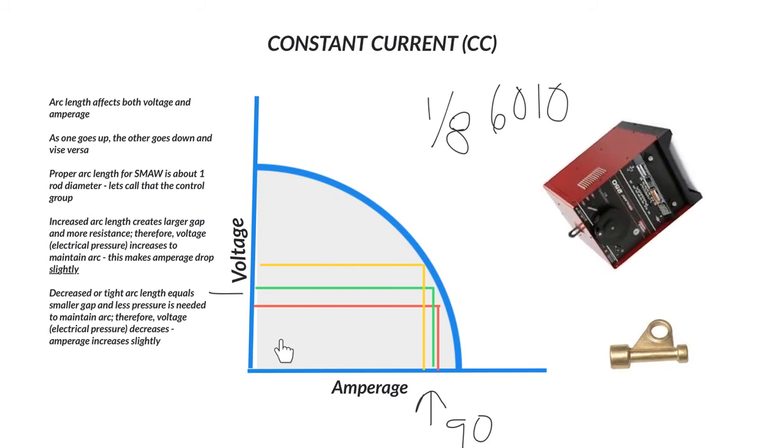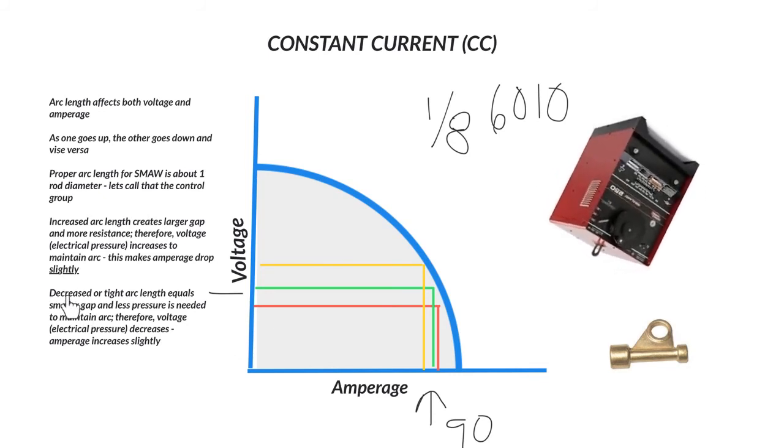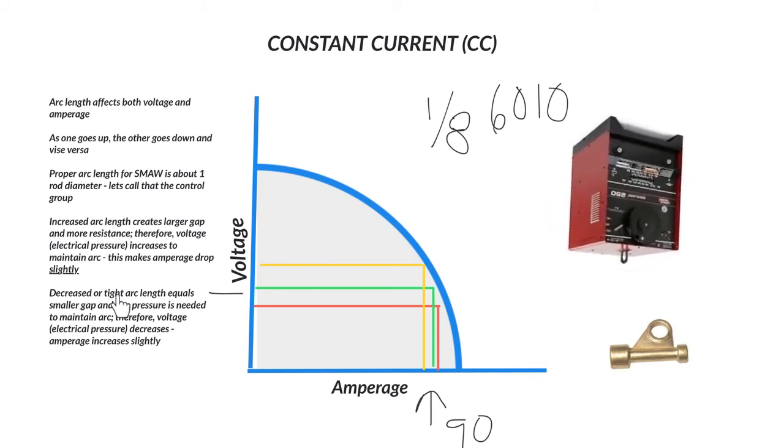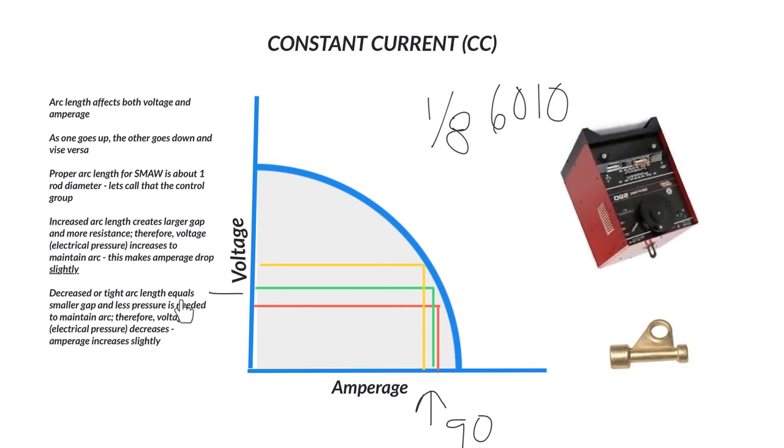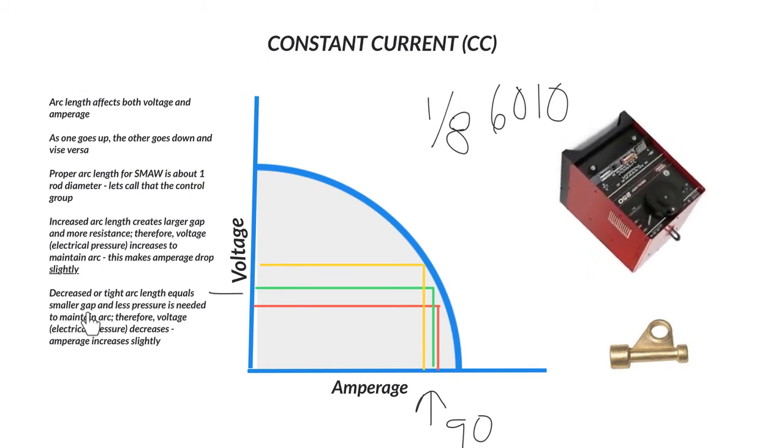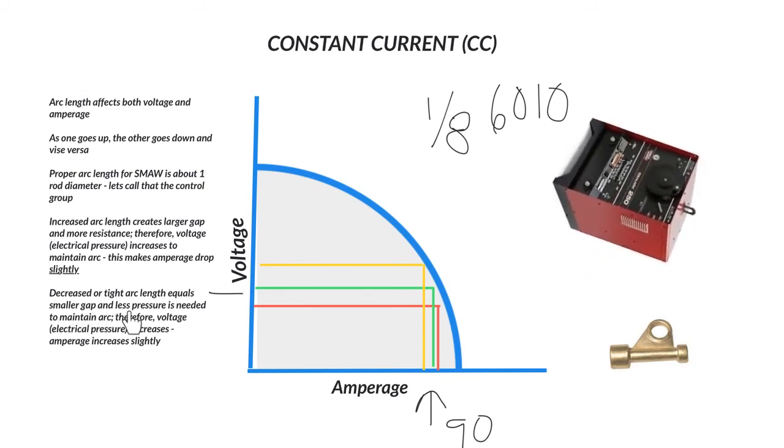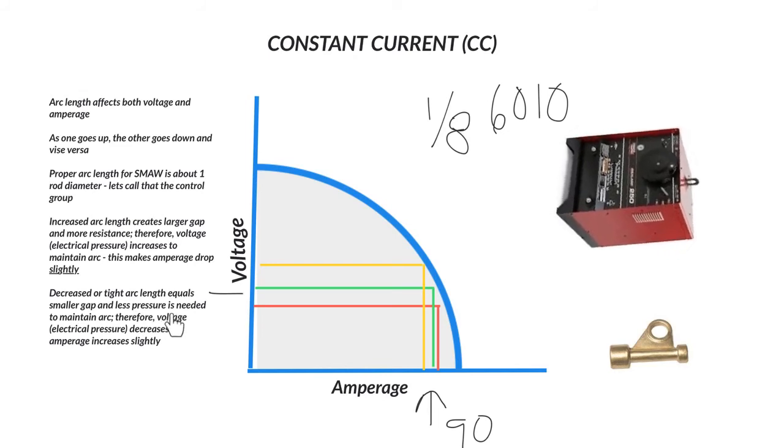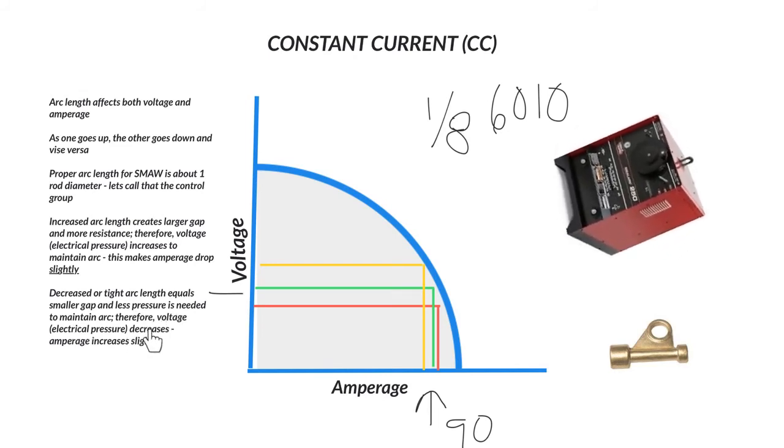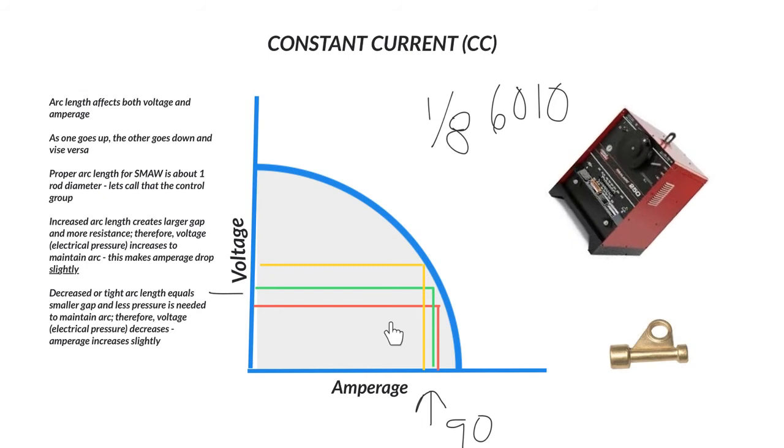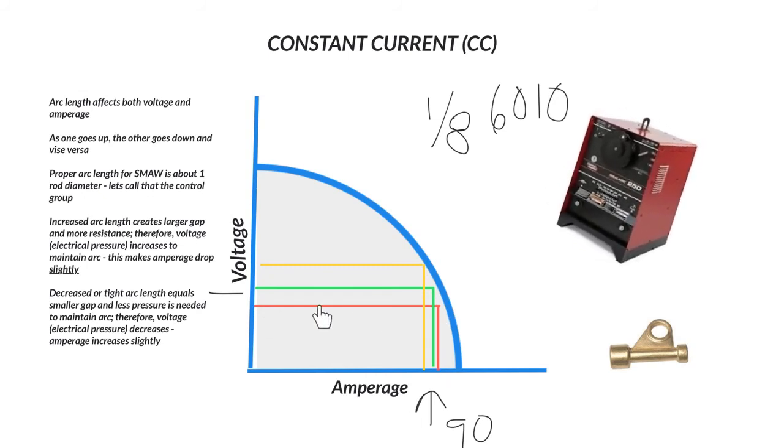So then we have the opposite effect. If we decrease the arc length or have a tight arc length, it means that the arc gap is smaller, which means we need less pressure or voltage to maintain that arc. So the voltage actually drops, and that means that our amperage goes up.